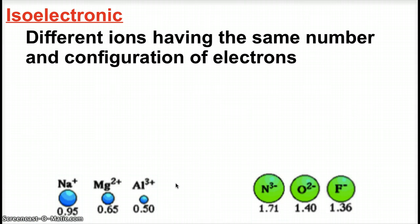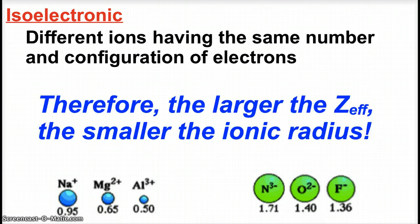Also notice, all six of these have 10 electrons. They are all isoelectronic, and the anions are still clearly bigger than all of the cations. What is our general trend that we see here? The larger the Zeff, the smaller the ionic radius. But you've got to make sure you're dealing with isoelectronic ions when we're going to use that generalization.